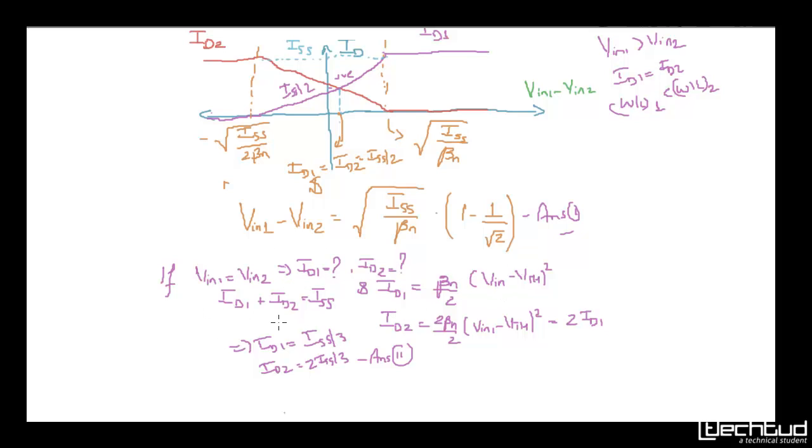Second order equation and this is the summation case here. So since id1 will be βn by 2 and id2 will be twice of βn because w by l is double. So when we put here that is equal to twice of id1, so 2 id1 instead of id2 we can put.